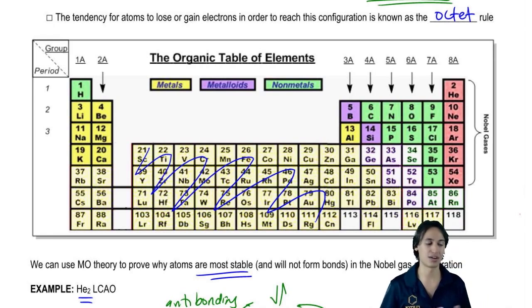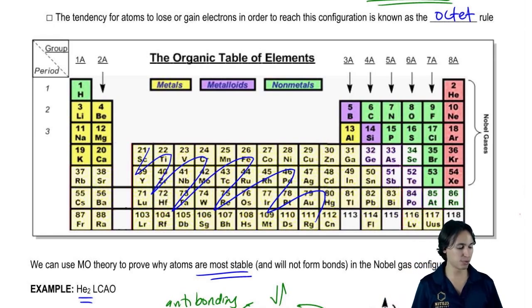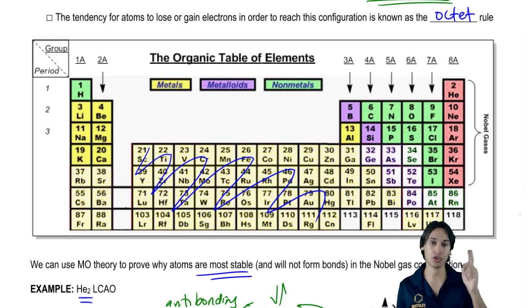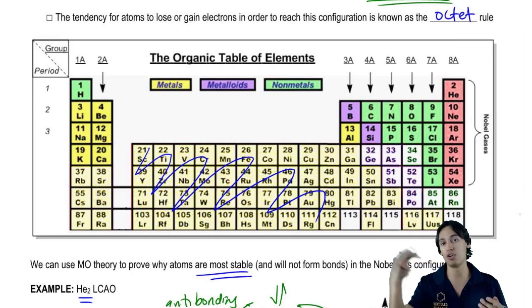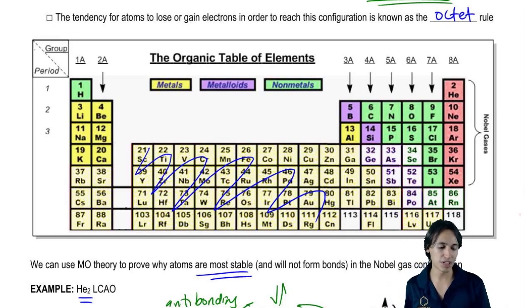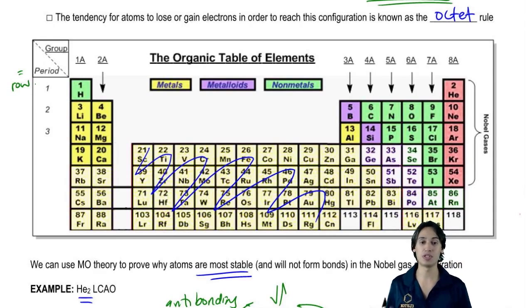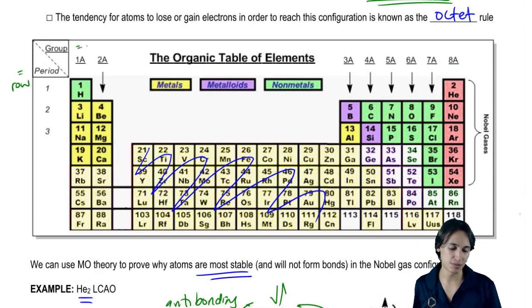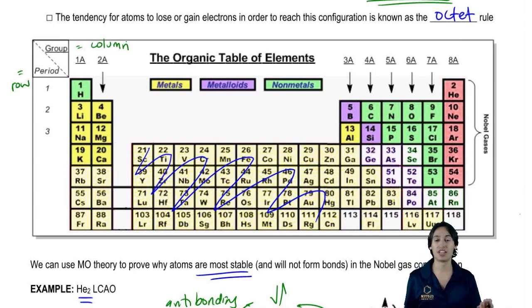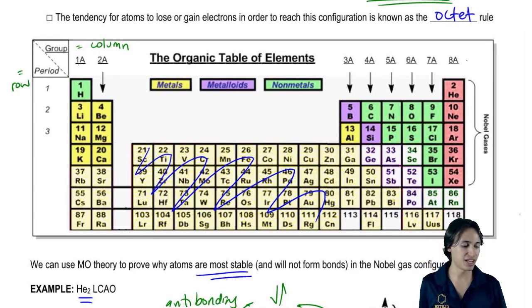In organic, we don't really care about categorizing atoms so much. But what really is important is knowing the groups that these atoms are in and knowing the periods that they're in. So remember that period is just the same thing as saying row. So if I ever say row, that means period. Group is the same thing as saying column. So if I ever say column 7, that means group 7. And it's just important to know that you've basically got groups 1 through 8.